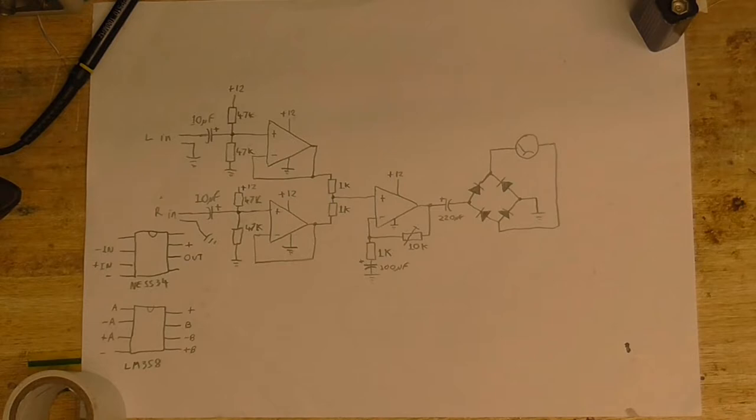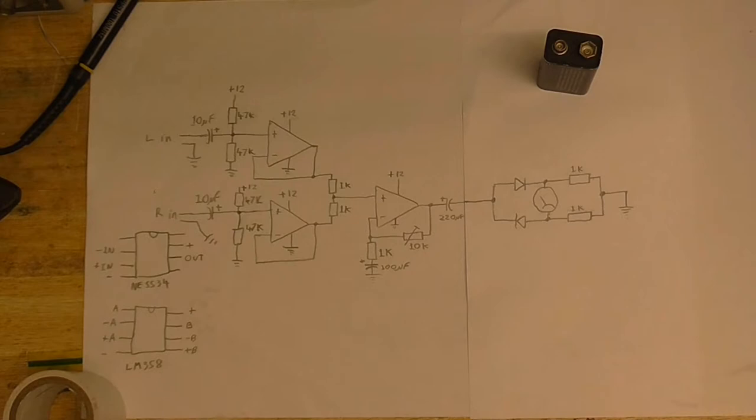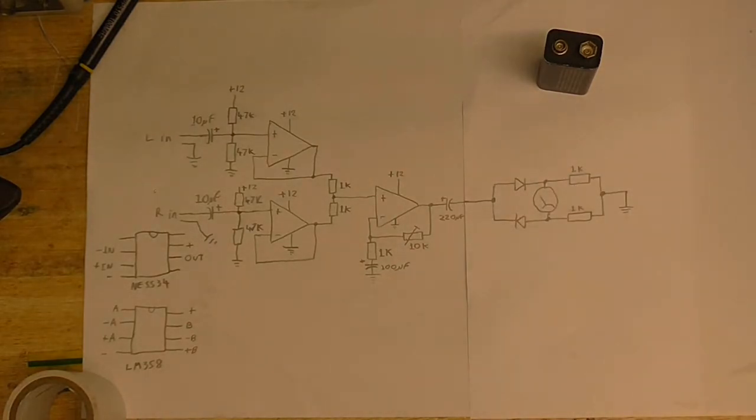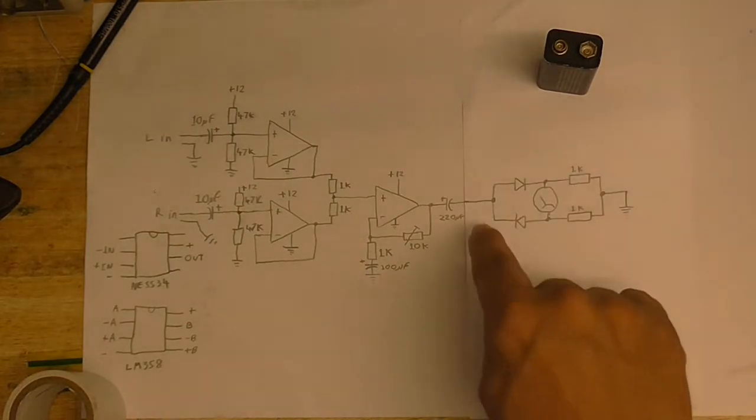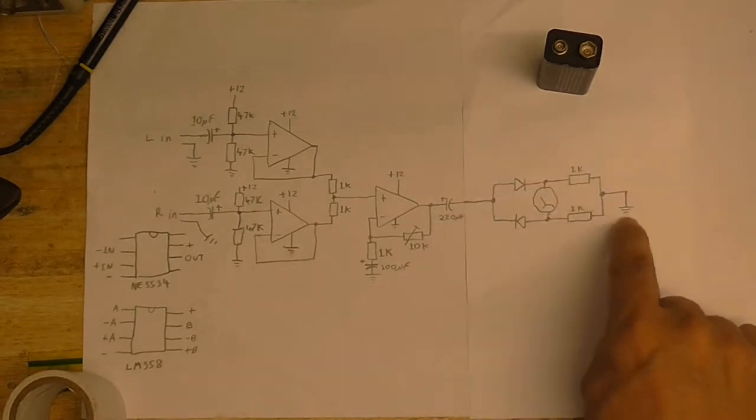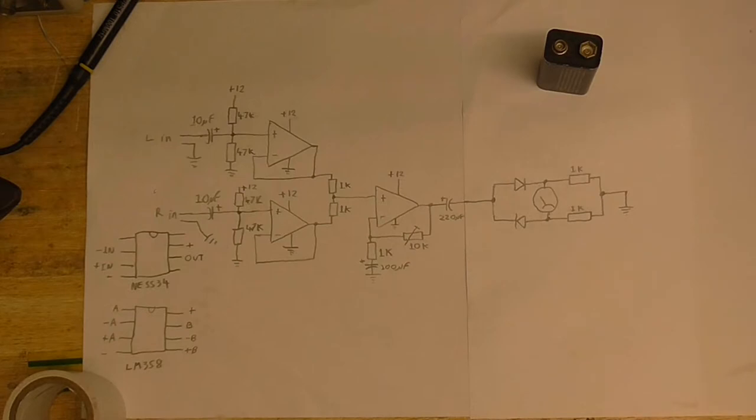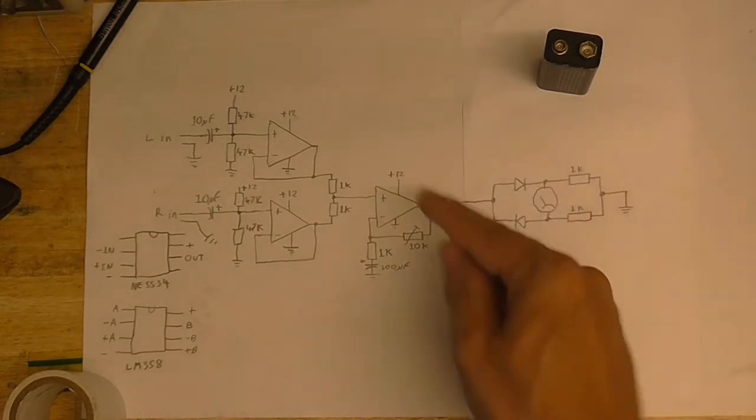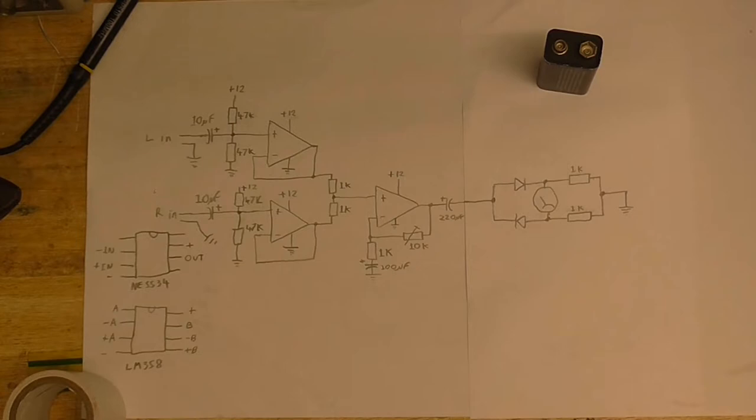So I think maybe a different kind of rectifier with less diodes is in order. So this is what I've come up with. In this rectifier, there are only two diodes and two resistors. It's still full-wave rectification. When the audio signal is positive, it goes through this diode, then through the meter, then through this resistor, and into ground. And when the audio signal's negative, it's the other way around. Comes up here, goes through this resistor, then through the meter, then through this diode. So of course I don't know how well this will work, but we'll see.